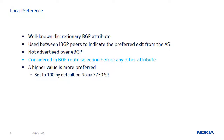The Local Preference attribute is the first to be considered in BGP route selection before any other attribute. So when multiple routes exist for the same prefix, the route with the highest local preference value is preferred. By default, the Nokia 7750SR uses a local preference of 100 for all routes advertised to IBGP peers.